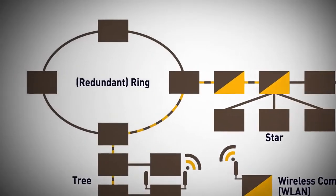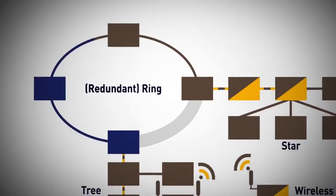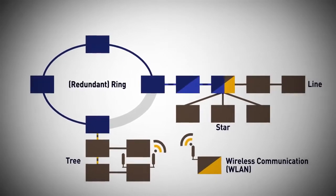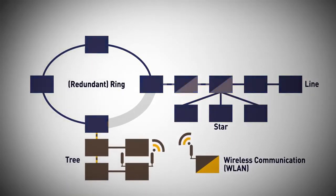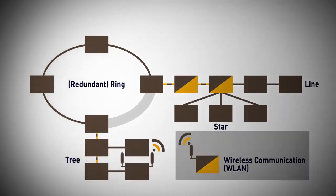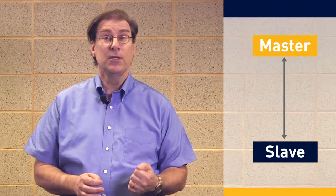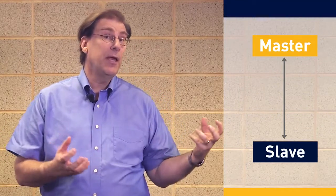This is a ring topology. Say we cut that section. Information could still flow to all the different nodes because of the ring. If it can't go one way, it goes the other way. You have star topologies, you have tree topologies, and you can even have wireless.